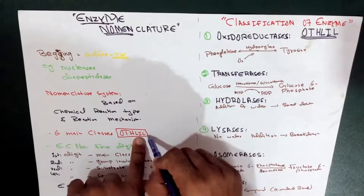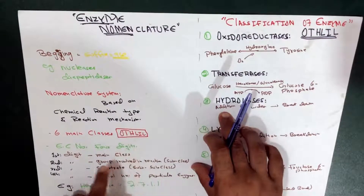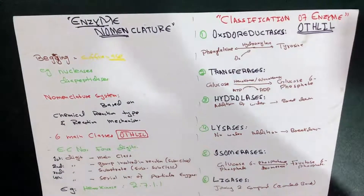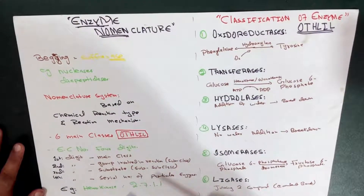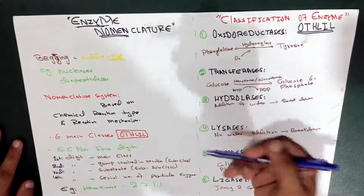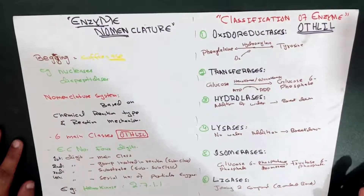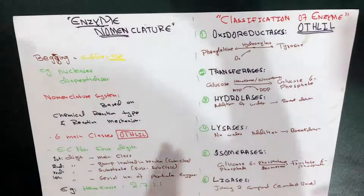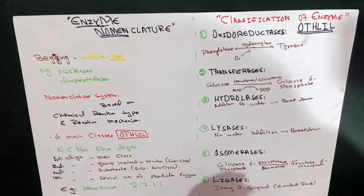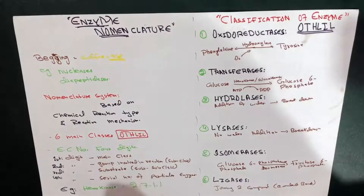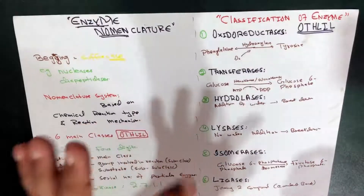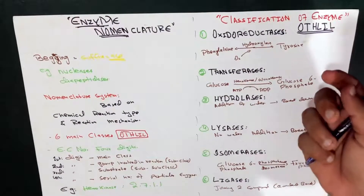Each enzyme is assigned an EC number — a four-digit code. In order to name an enzyme according to the new IUB rules, every enzyme has been given a particular four-digit number. For example, if I give you the code 2.7.1.1, this means I am referring to the enzyme hexokinase.